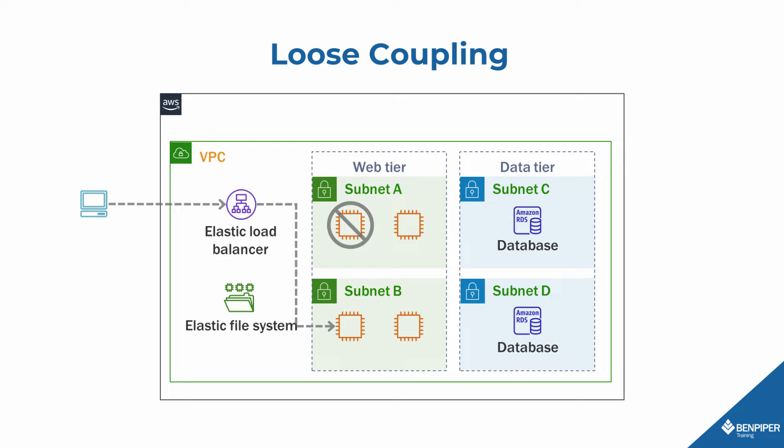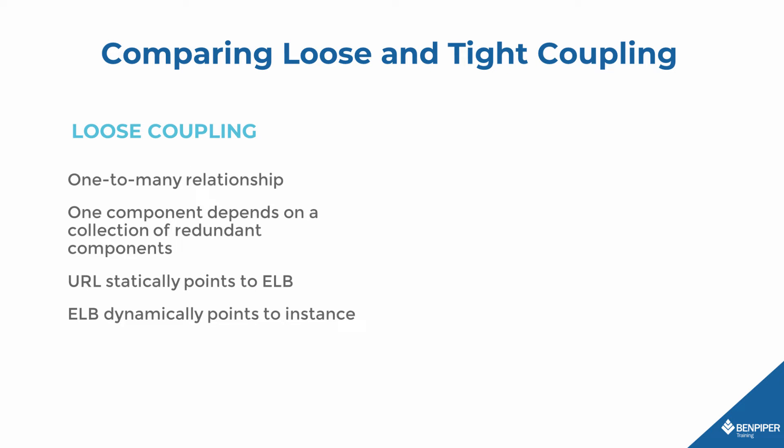To put a finer point on it, the application's URL and the individual EC2 instances are loosely coupled. In loose coupling, there is a one-to-many relationship between components. One component depends on a collection of redundant components rather than depending on one specific component. In the case of our example application, the URL endpoint the user uses to access the application does not depend on a particular EC2 instance being up. As long as any instance is up, the URL will take the user to the application — one URL, many instances.